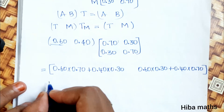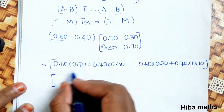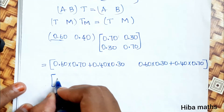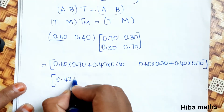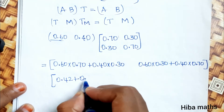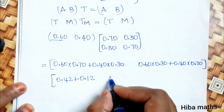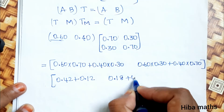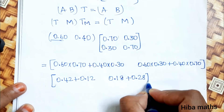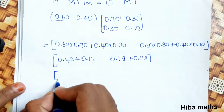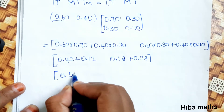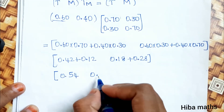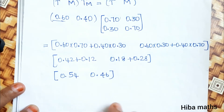Multiplying through: 0.42 plus 0.12 equals 0.54, and 0.18 plus 0.28 equals 0.46. So the result values are 0.54 and 0.46.